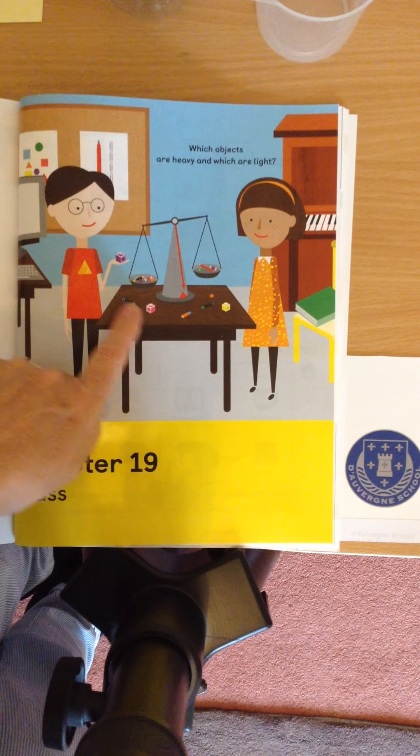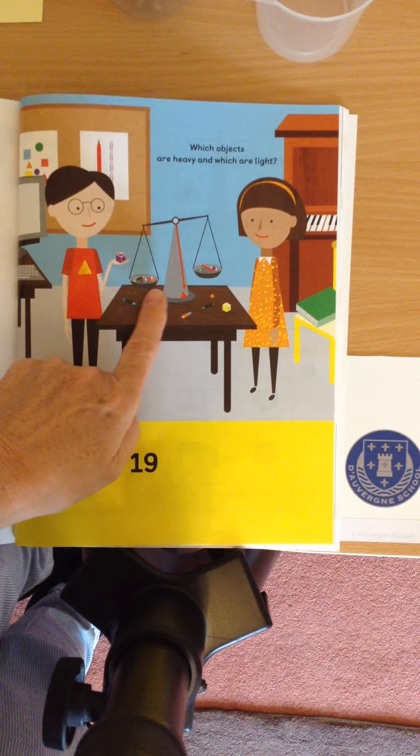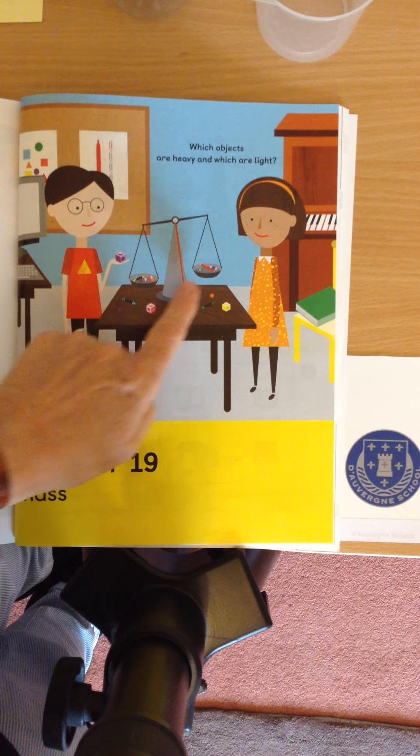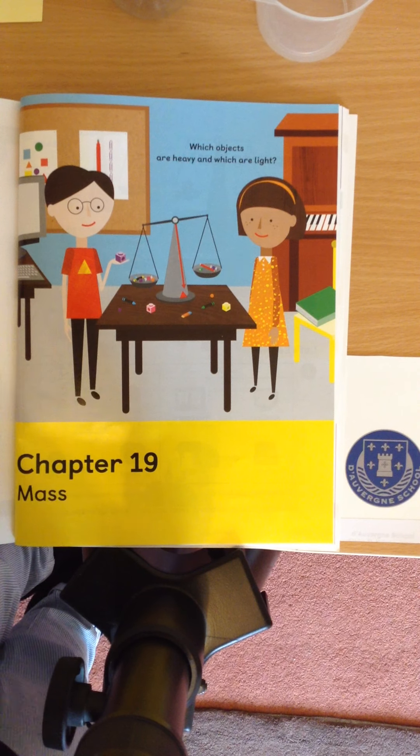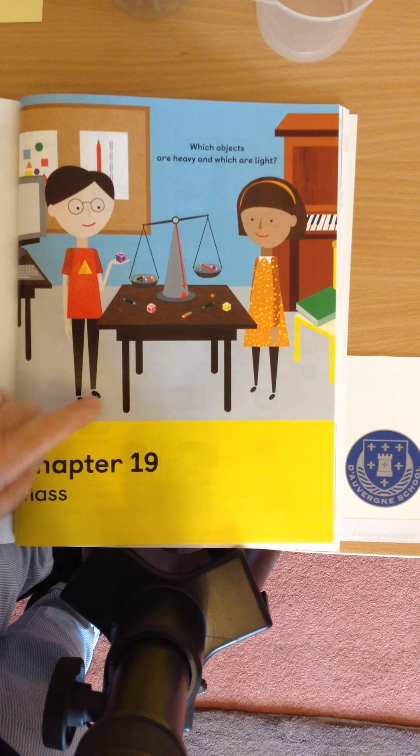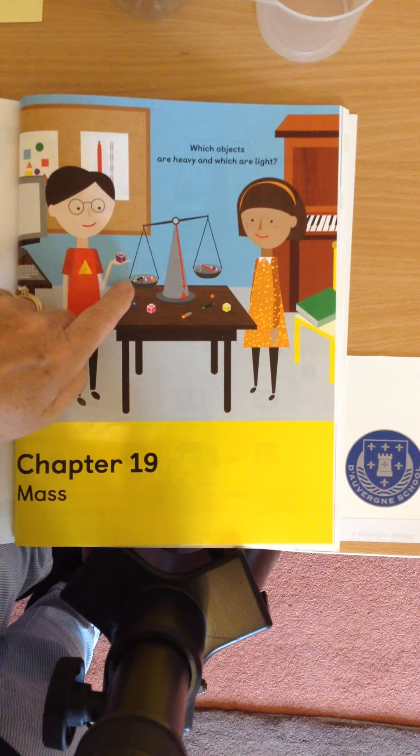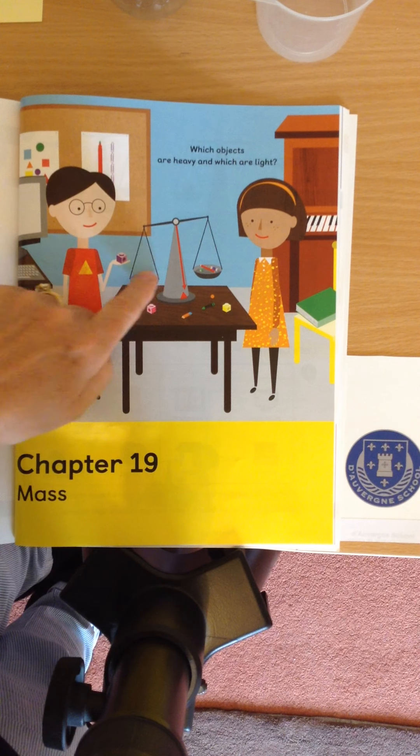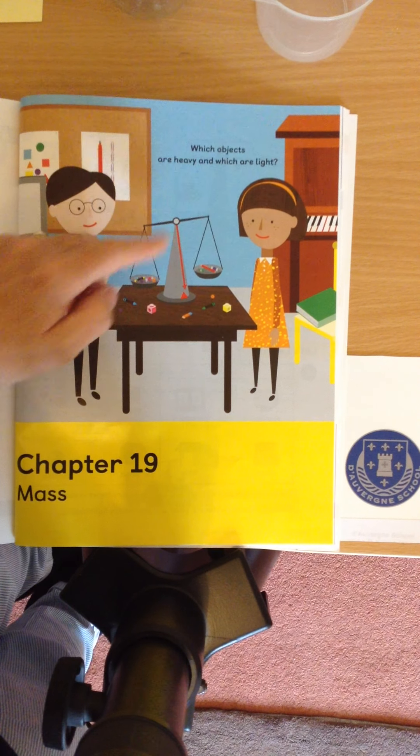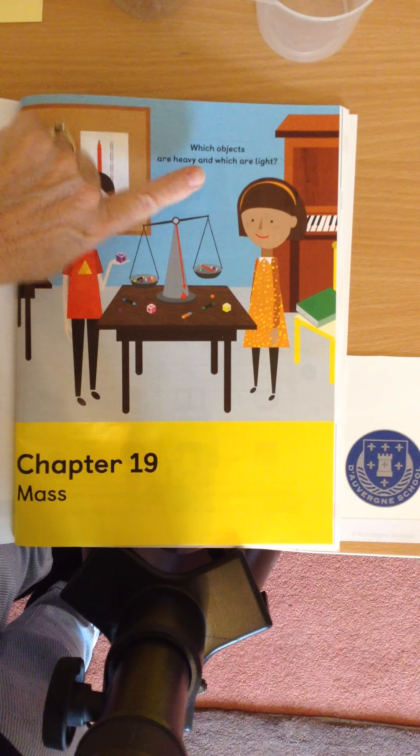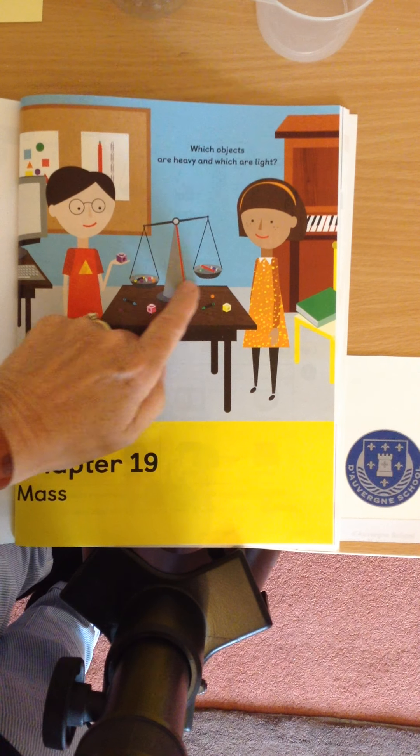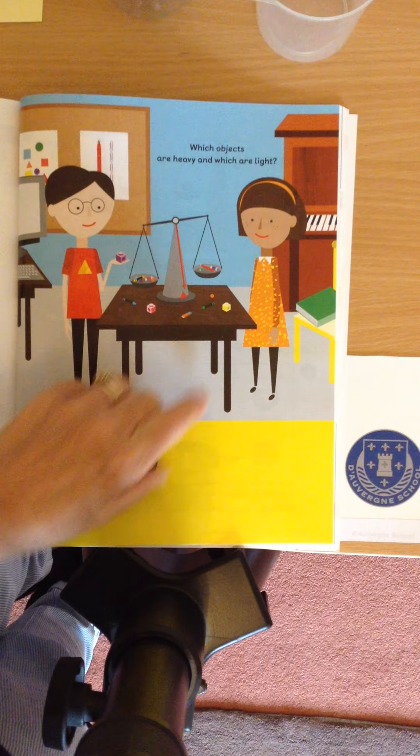If we look at these scales here, we've got a pan here and a pan here. How do we know which is heavier and which is lighter? What happens to the scales when it shows heavier? That's right, it's the one that's further down. The more objects in here or the heavier the mass, the heavier the object pulls the pan down and that line, can you see, has moved down. So this is heavier, that side is lighter.